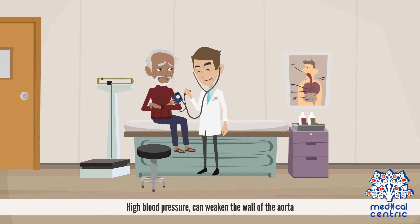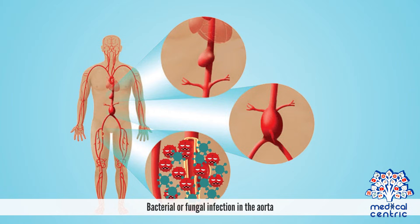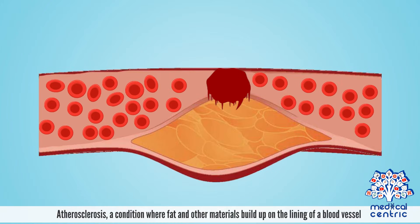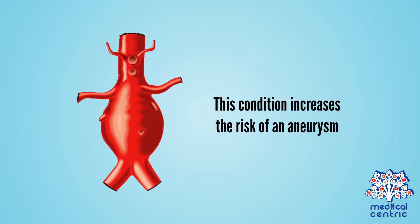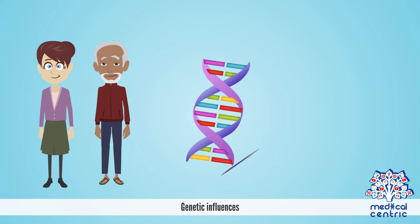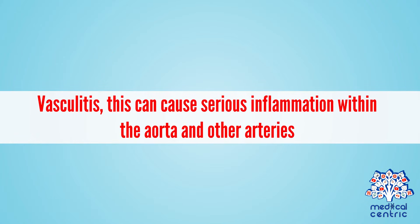High blood pressure can weaken the wall of the aorta. Bacterial or fungal infection in the aorta. Atherosclerosis, a condition where fat and other materials build up on the lining of a blood vessel, increases the risk of an aneurysm. Trauma, such as being in a car accident. Genetic influences. Vasculitis can cause serious inflammation within the aorta and other arteries.